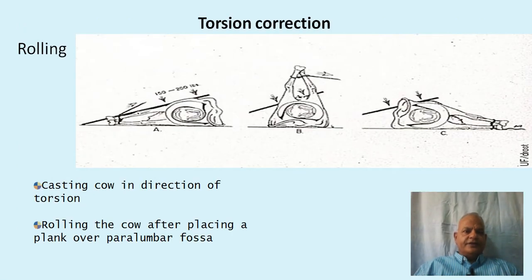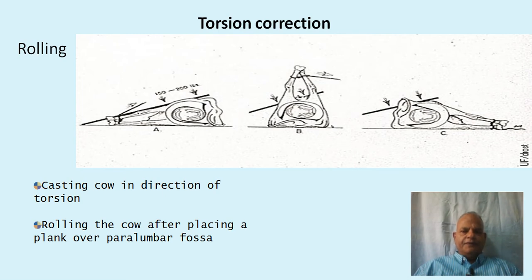For torsion correction by rolling, the animal is cast on the side of the torsion in lateral recumbency and rolled toward the side of the torsion. The concept is that the uterus, being a heavier organ, remains at the same place when the animal is rotated, so when the animal is moved in that direction, the torsion is corrected.